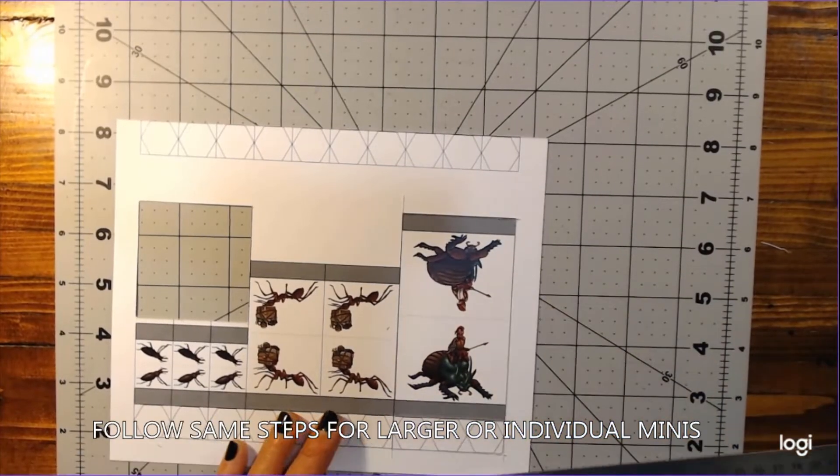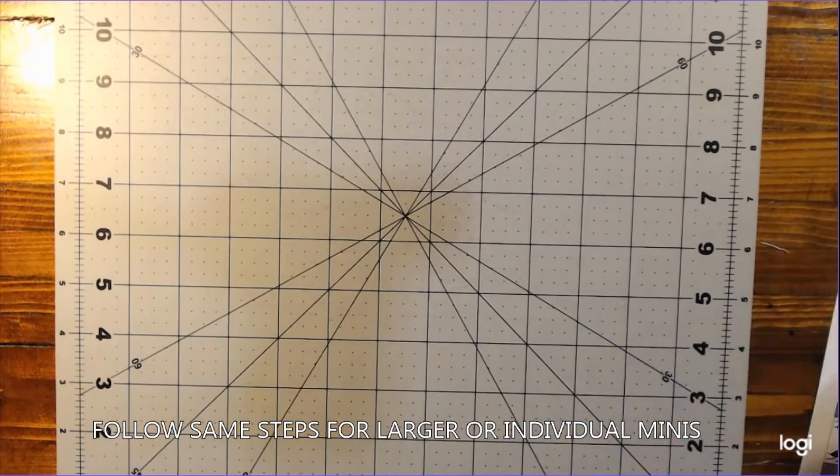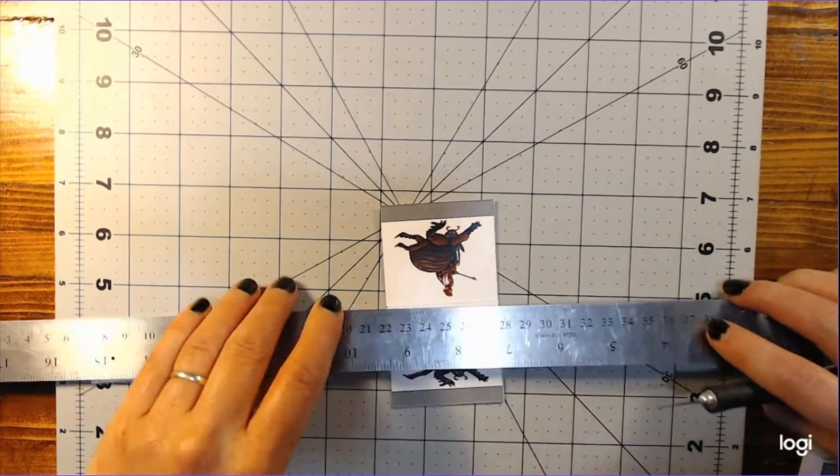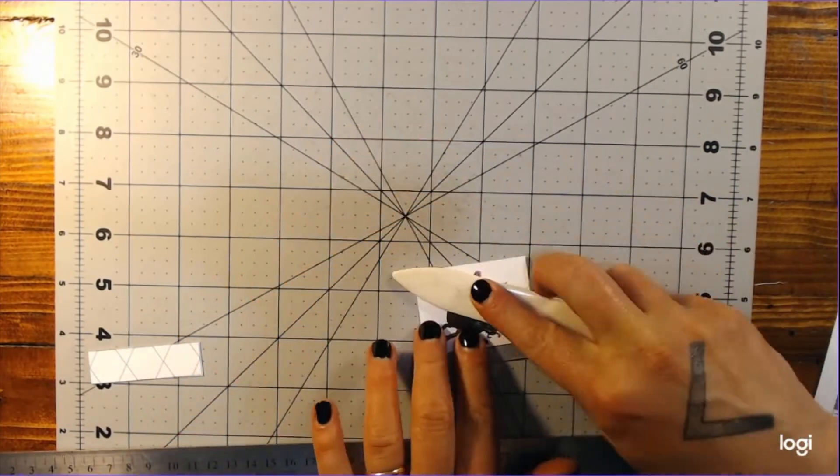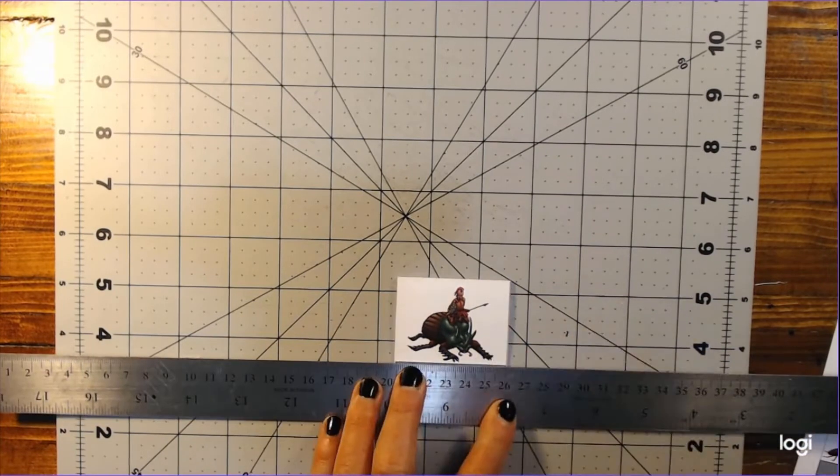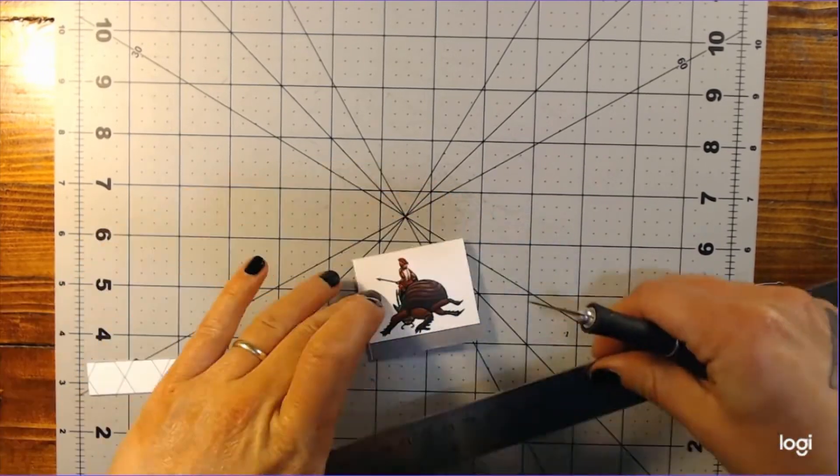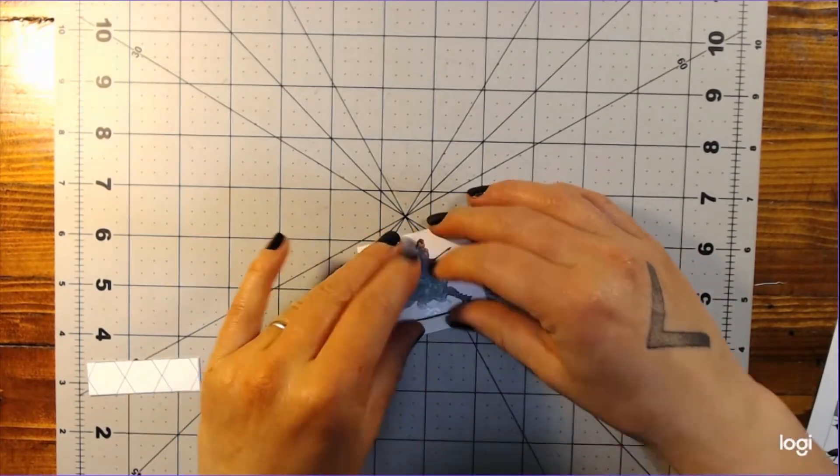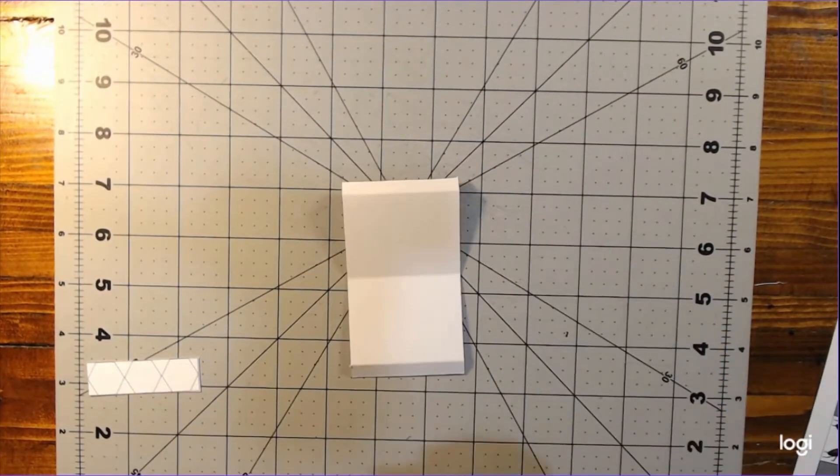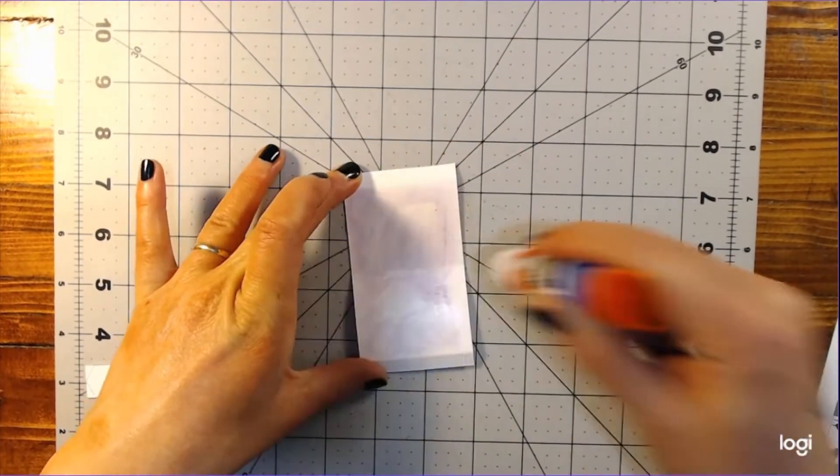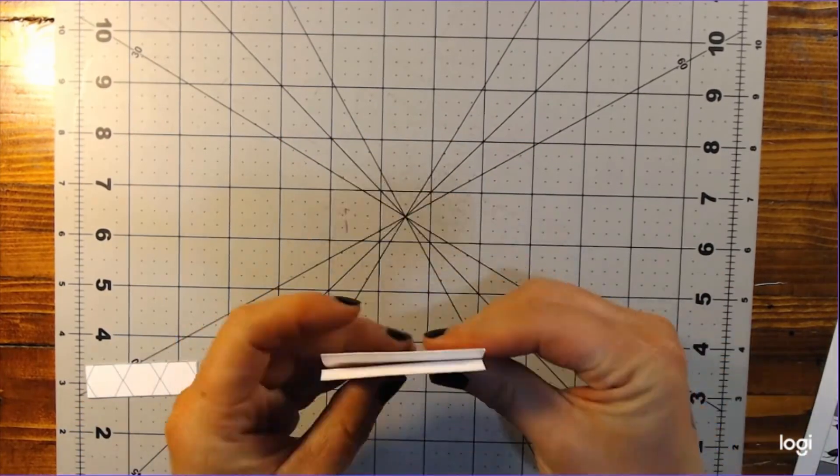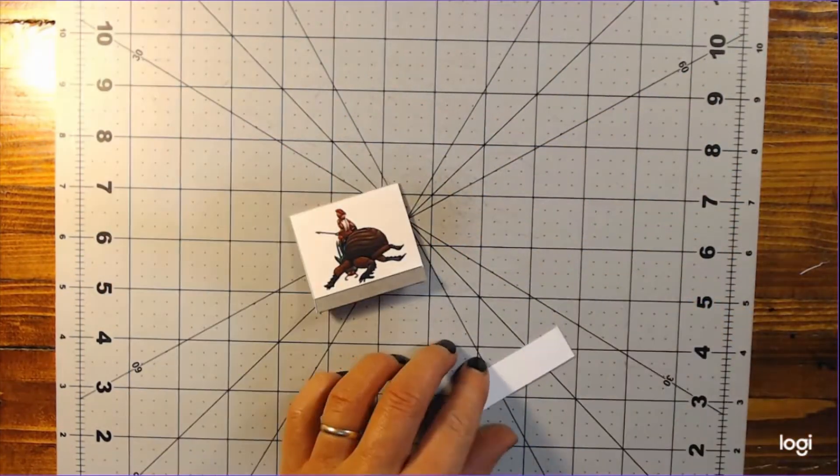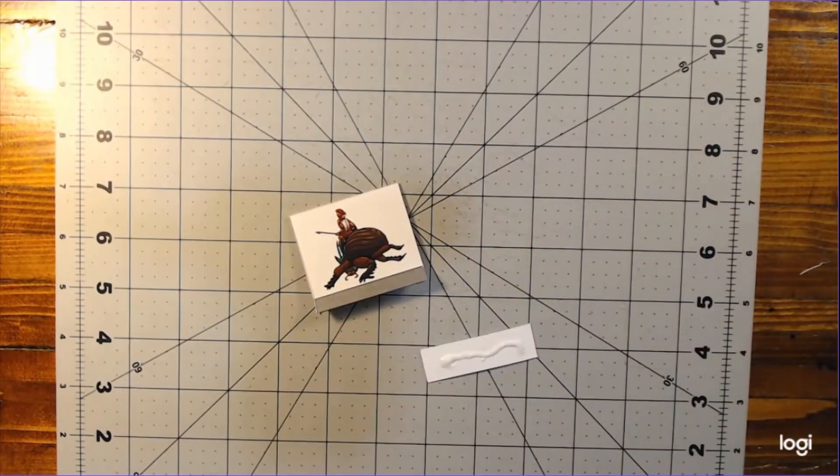The same assembly process applies when working with a single or odd sized paper miniature. Cut free from the cardstock sheet. Score and fold. Score and fold out bottom flaps. Apply glue to the back of the figure between score lines and fold together. Once the glue on the figure is dry, fold out the flaps and attach the corresponding base with liquid school glue.